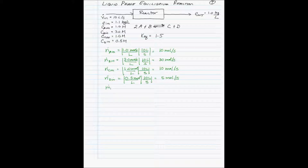Let's do a material balance around this reactor considering mass flow rate. The volumetric flow rate of the total feed coming in is 10 liters per second multiplied by the density of 1.1 kilograms per liter, giving 11 kilograms per second. At steady state, the mass flow rate out equals 11 kilograms per second. Dividing by the outlet density of 1.0 kilograms per liter, the volumetric flow rate leaving the reactor is 11 liters per second.